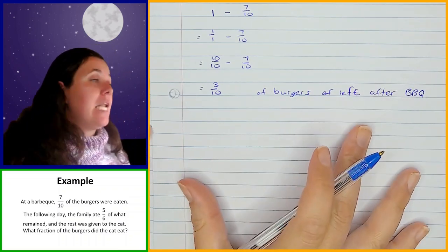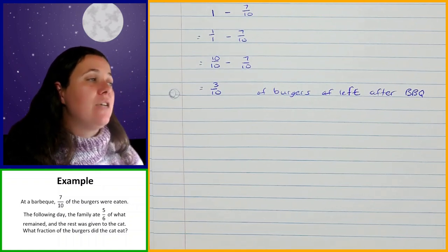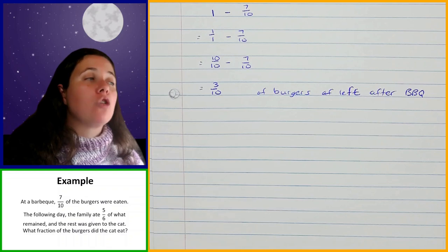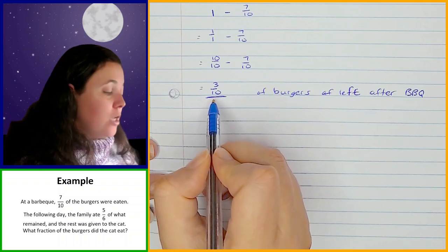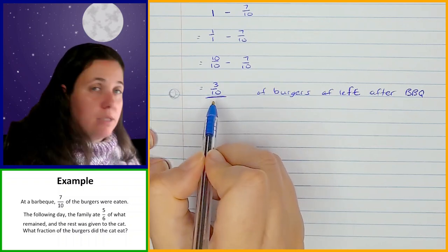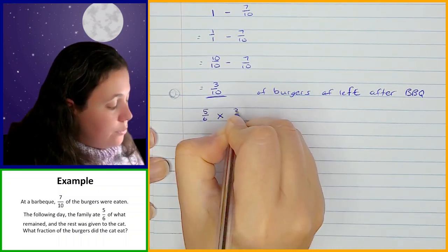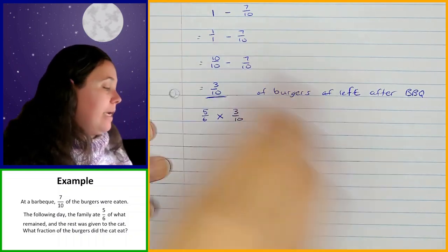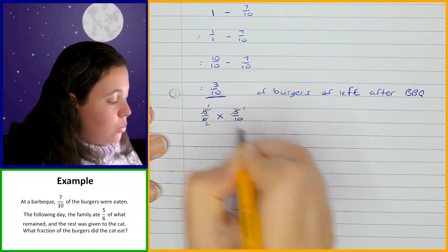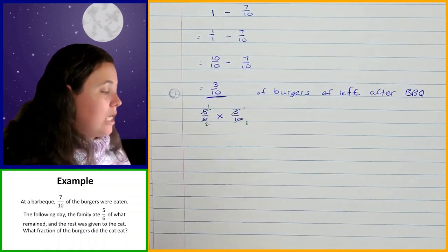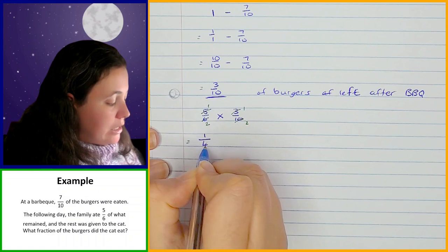Now we need to find out how much the family ate the next day. The family ate five sixths of what remained, which is three tenths. Remember, 'of' means multiplication, so it's five sixths times three tenths. Simplifying: 3 goes into 3 once and into 6 twice; 5 goes into 5 once and into 10 twice. That leaves 1 times 1 over 2 times 2, which is one quarter.